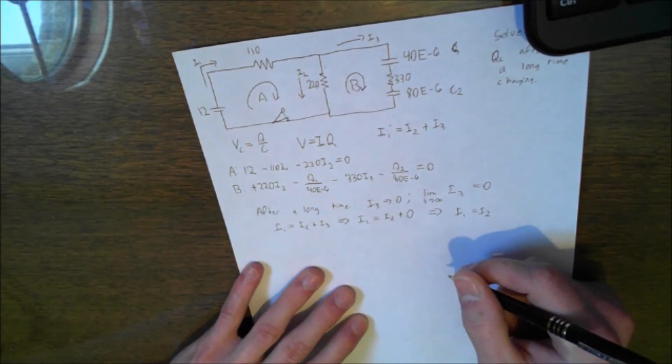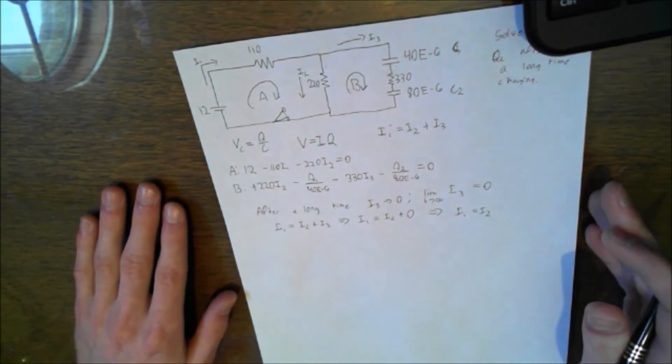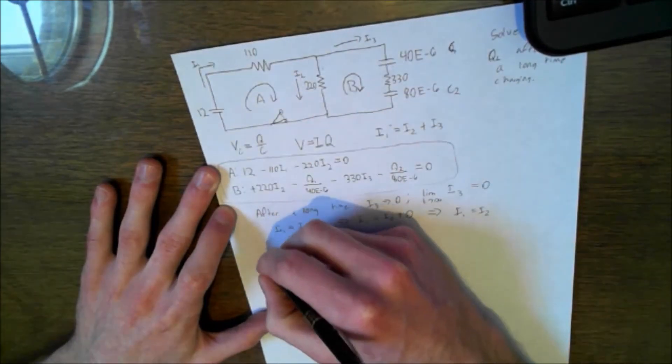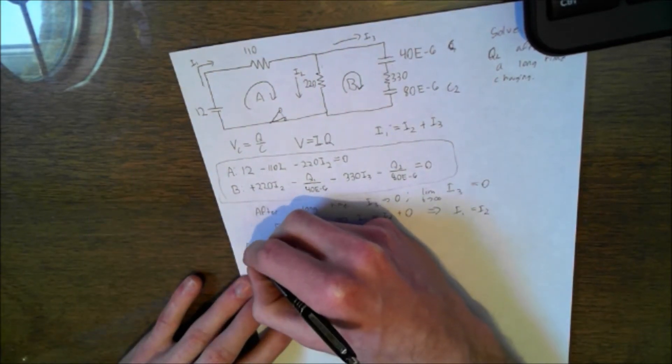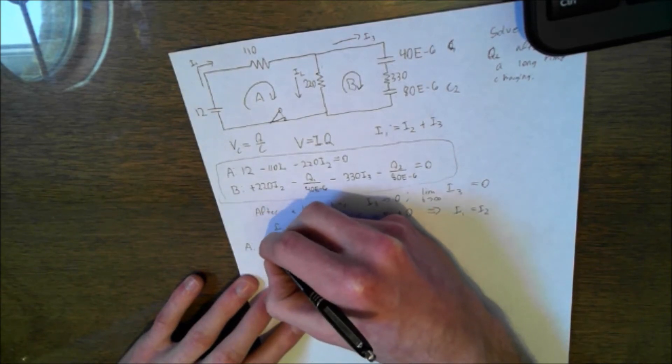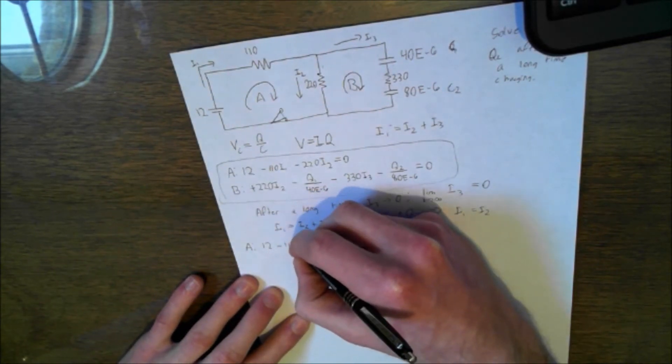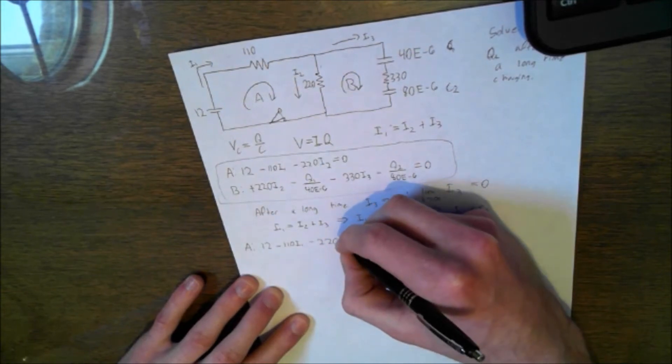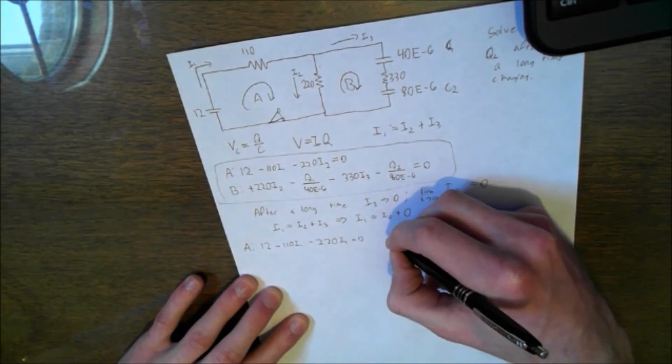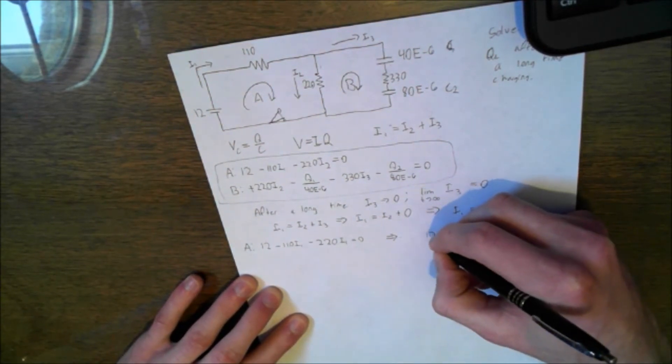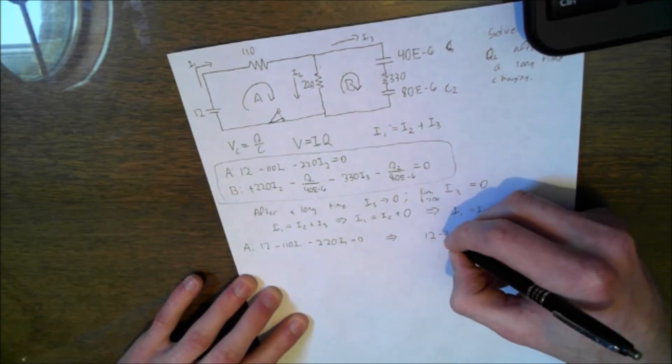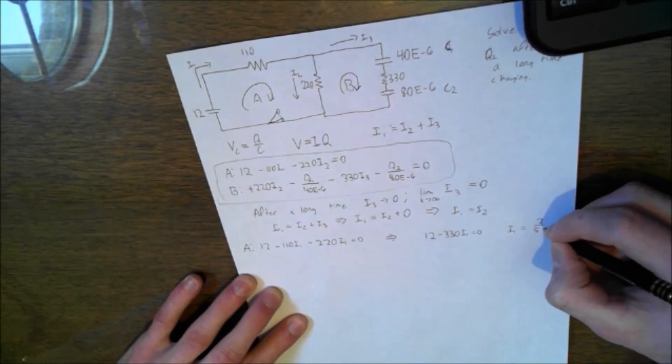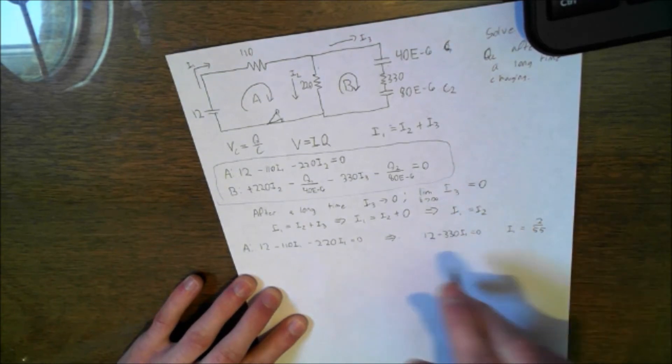So we're going to rewrite our equations that we got up here. We're going to rewrite loop A first. So A is going to be 12 volts again minus 110 I1. But now since I2 is equal to I1, we're going to write negative 220 I1 is equal to 0. And then we get that that is equal to 12 minus 330 I1 is equal to 0. And then we get that I1 is equal to 2 over 55. That's just, we just moved that over and divided that, you know, algebra, whatever. So that's 2 over 55 amps.